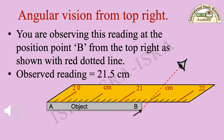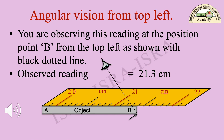Angular vision from top right: You are observing the reading at position point B from the top right, as shown with the red dotted line. The observed reading is equal to 21.5 cm. Angular vision from top left: You are observing the reading at position point B from the top left, as shown with the black dotted line. The observed reading is equal to 21.3 cm.